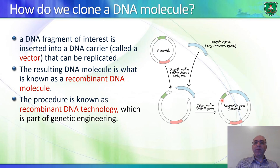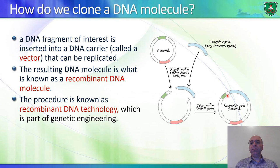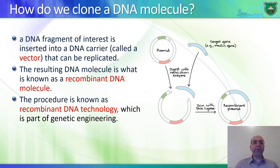Since the sticky ends are combined by non-covalent hydrogen bonds, which are reversible, we add a ligase to stabilize the molecule by forming phosphodiester bonds at each end of the DNA fragment and each end of the plasmid. This whole process is known as recombinant DNA technology — a technology that allows for the formation of recombinant DNA, and it is part of genetic engineering.